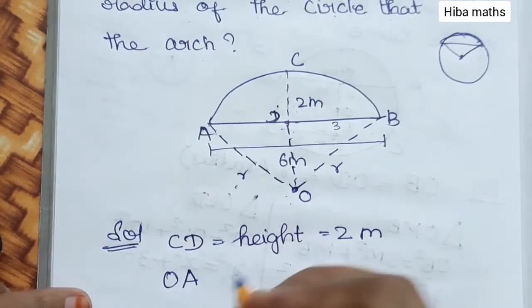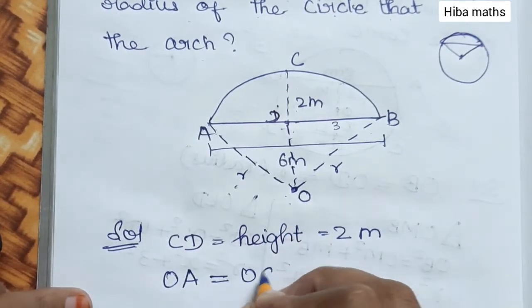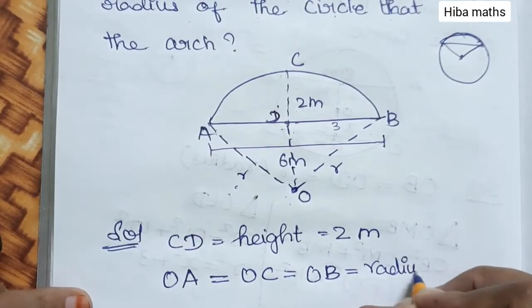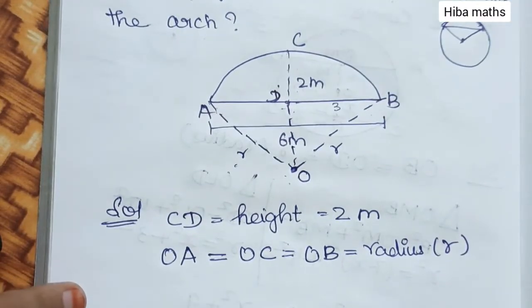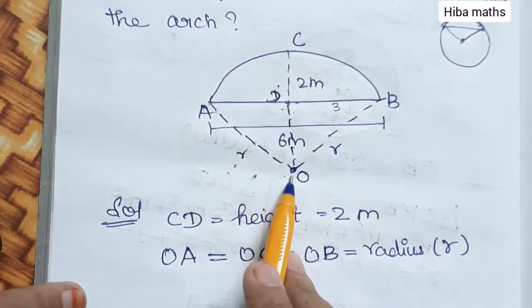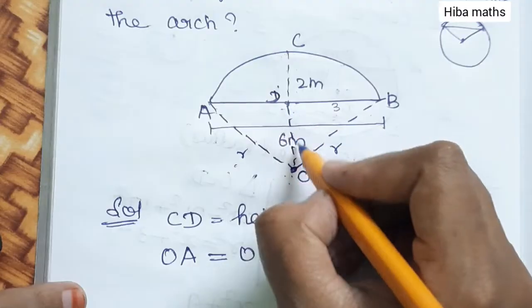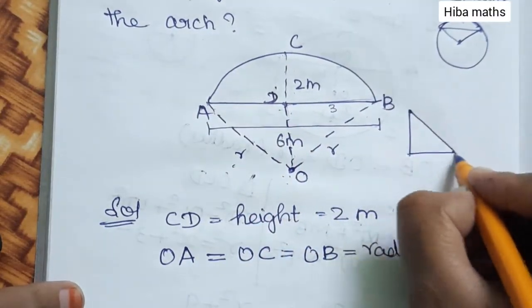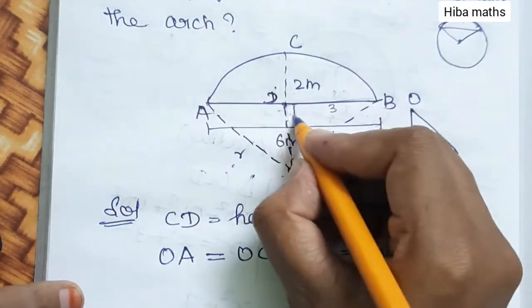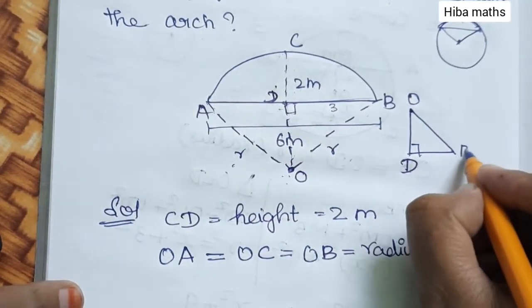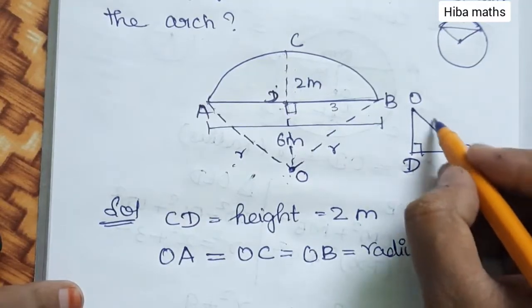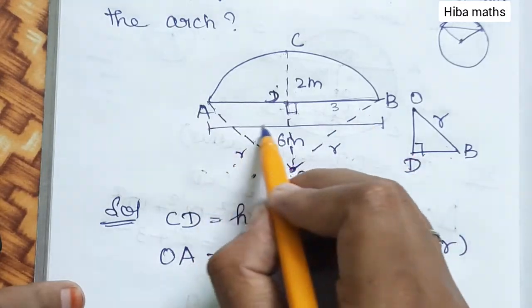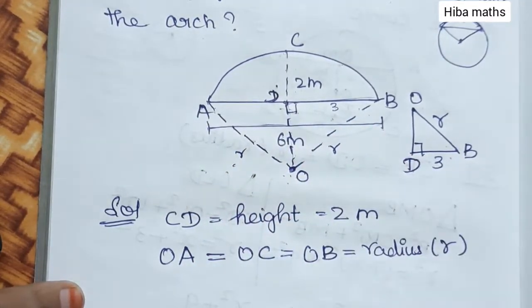OA is equal to OC is equal to OB, which equals radius R. We consider triangle OBD. OB is the radius, and BD — since AB is 6, we take half, so BD equals 3 meter.